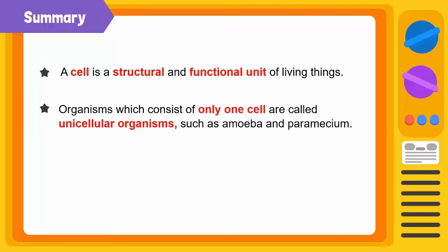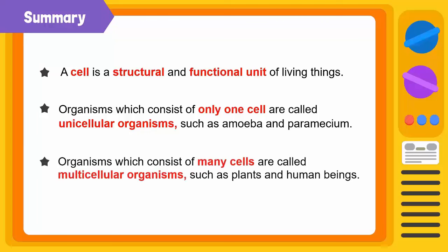Organisms that have only one cell are called unicellular organisms, such as amoeba and paramecium. Organisms that function with many cells are called multicellular organisms, such as plants and human beings.